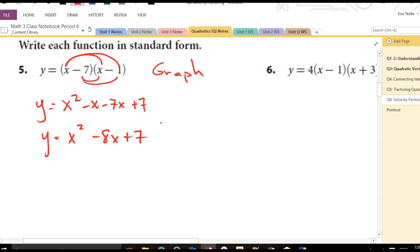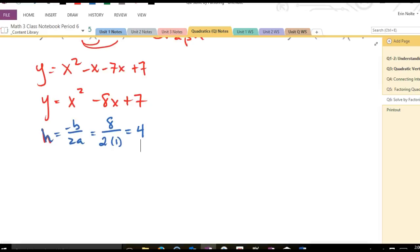If I was going to graph that in standard form, I would have to start by finding my vertex, right? So by definition, how do you find the vertex? Remember, it starts with the H. Negative B over 2A. What's my negative B value of that equation? 8, because it would be negative negative. So 8 over 2 times my A value? 1. So 8 divided by 2 makes 4. Then to find the K value, what do I do?